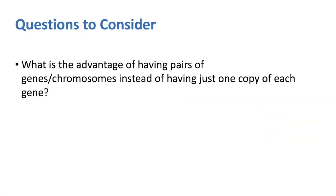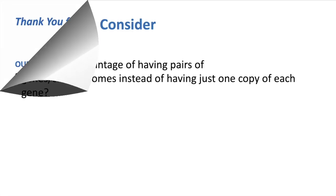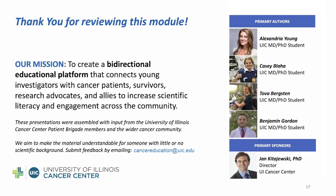A question to consider: what is the advantage of having pairs of genes and chromosomes instead of having just one copy of each gene? Thank you for taking the time to review video 3 in the series. Please make sure to check out video 4 on when things go wrong. We would like to thank everyone involved in the creation of these videos, including the University of Illinois Cancer Center and all the research and patient advocates that assisted in the review of these modules.